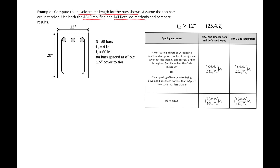Our section is a 12-inch by 20-inch beam with three number eight bars in the top, so all of the concrete below the number eight bars was cast below the number eight bars. The limit for both of our development length calculations is 12 inches — this is the limit for straight bar development.